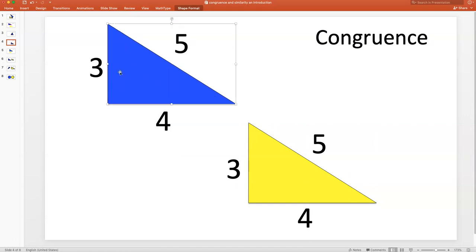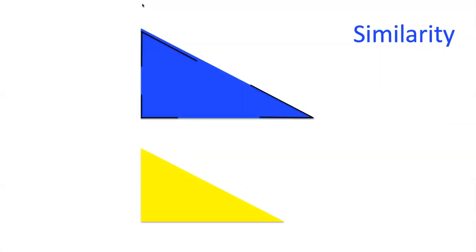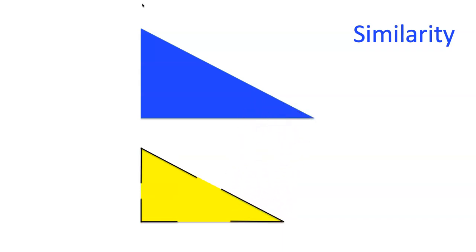Let's go to the next cool concept: similarity. Similarity simply means that two figures have the same shape but not necessarily the same size. Do you think these two triangles are similar? It's really hard to tell. So one thing you can do is check the angle measures — if the corresponding angles have the same measure, then the triangles are similar. Let's check it: same measure, same measure, same measure. So these two triangles are similar because the corresponding angles have the same measure.